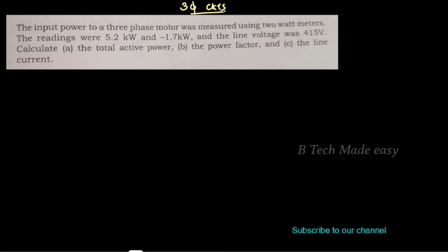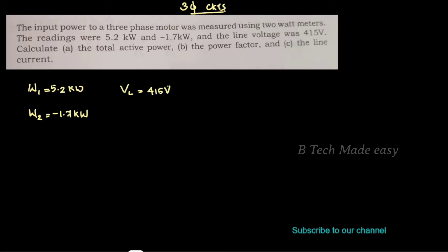Let's review the given data. The three-phase motor input power is measured using two watt meters. Let the two watt meter readings be W1 equal to 5.2 kilowatt and W2 equal to minus 1.7 kilowatt. The line voltage VL is equal to 415 volts.